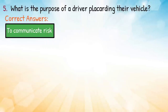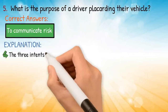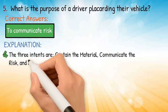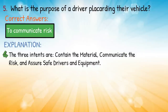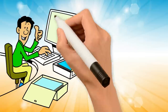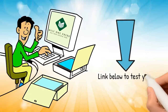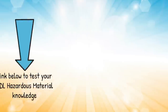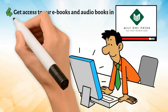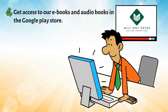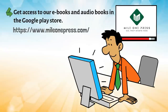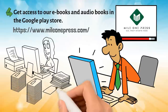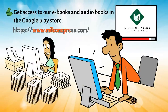Question five: what is the purpose of a driver placarding their vehicle? Correct answer: to communicate risk. Explanation: the three intents are to contain the material, communicate the risk, and assure safe drivers and equipment. Feel free to take a free sample test in the link below. Get access to our ebooks and audiobooks in the Google Play Store. Find more CDL practice tests at mileonepress.com. Thanks for watching.